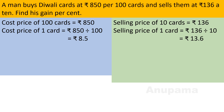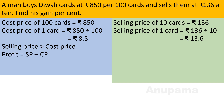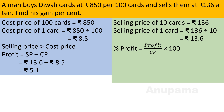Now we have cost price and selling price per card. Since selling price is greater than cost price, there is a profit — gain and profit are equal. Gain equals selling price minus cost price: 13.6 minus 8.5 equals rupees 5.1. Percent profit equals profit divided by cost price, multiplied by 100: 5.1 divided by 8.5, multiplied by 100. Solving this gives 60 percent gain.